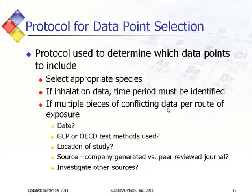As far as selection of the data point, we first look at the data available and determine the appropriate species. For inhalation data in particular, we must look at whether a time frame is identified — for instance, four hour, one hour, or eight hour — with that data point. If there are multiple pieces of conflicting data, then we look at things like the date of the study, whether a respected internationally accepted test method such as OECD or GLP study methods was used, where the study was conducted, whether the source was company-generated or found in a peer-reviewed journal, and whether other sources corroborate that particular data point.